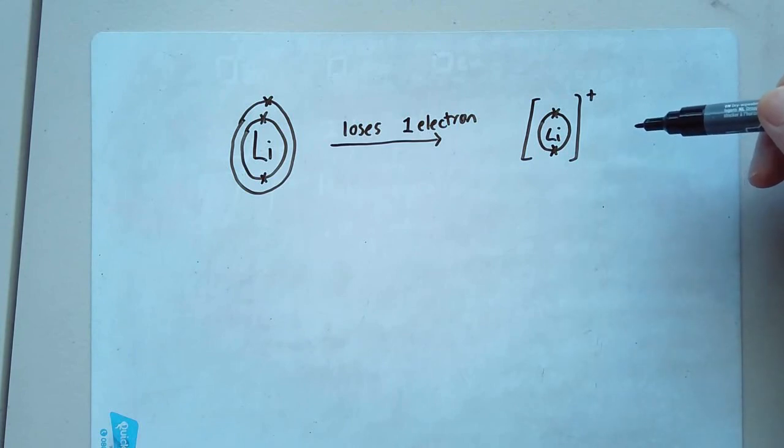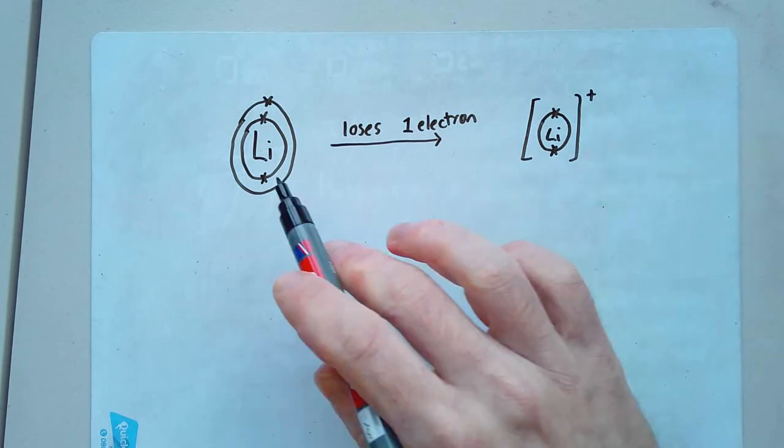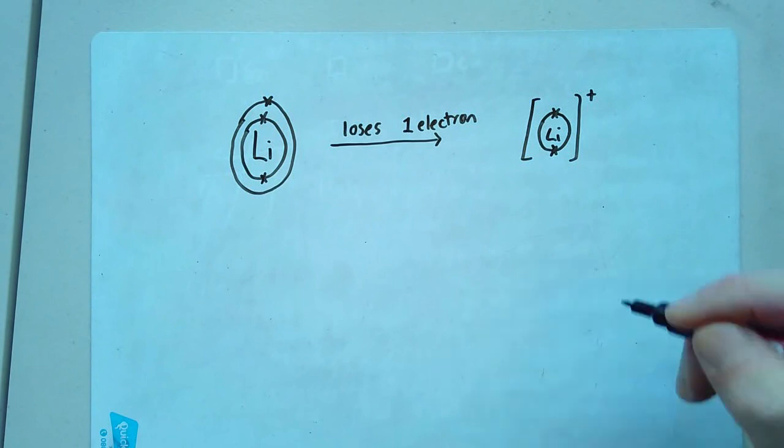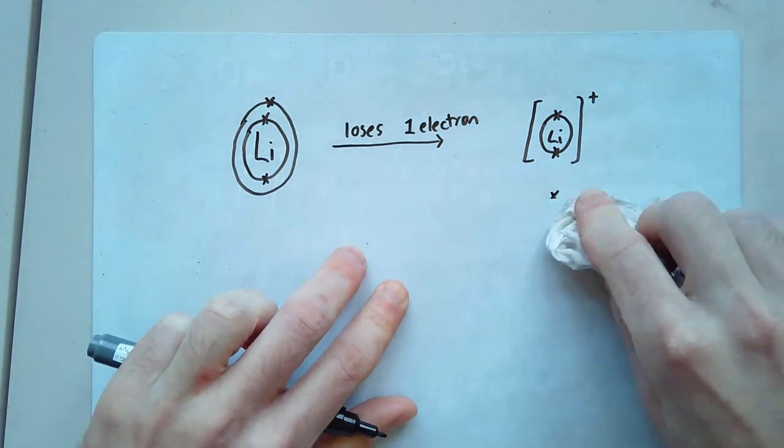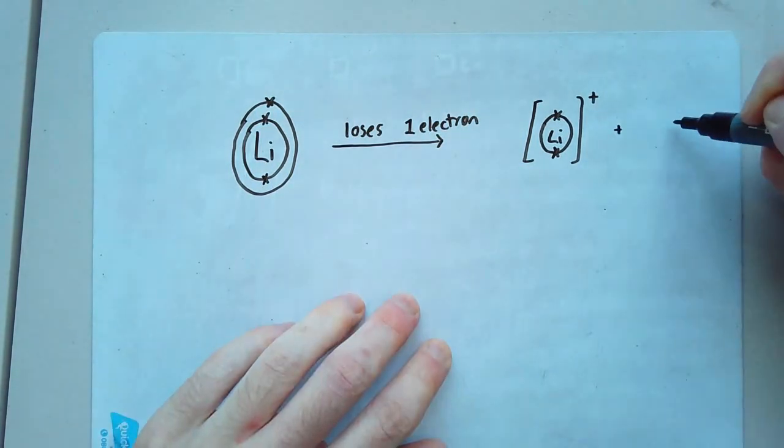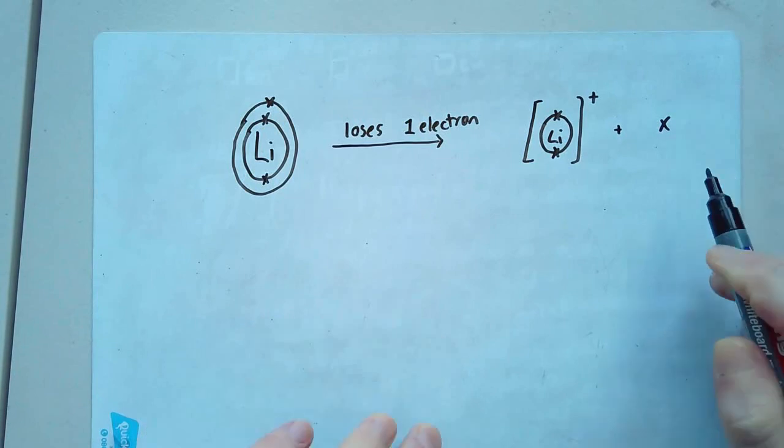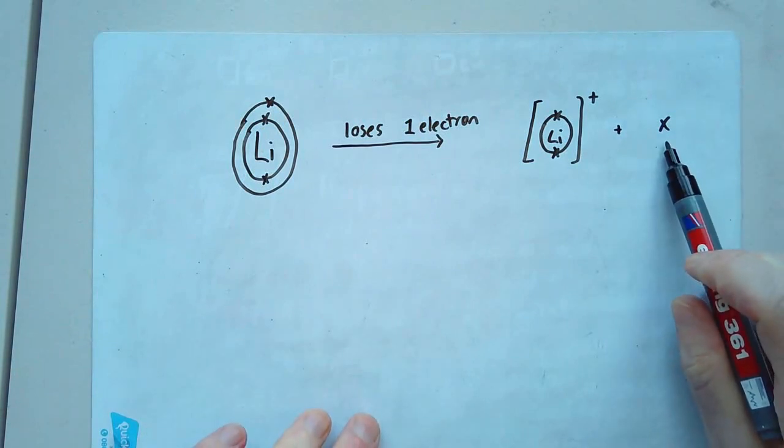So essentially, this lithium loses one electron, and it becomes an ion that looks like this. And it has a positive charge, because it loses an electron. Electrons have a negative charge. If you lose a negative, it's like you're gaining a positive. But the real question here is, where does that electron go? Where is it? Well, what I could do is, I could just draw it separate like that. I've got the ion, and I've got the electron that I've lost. I could even write a plus there, and a cross there, to symbolize that this is the electron that I've got.